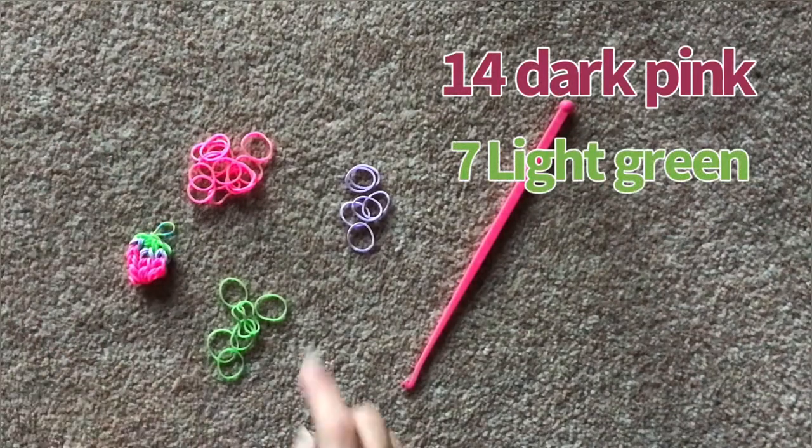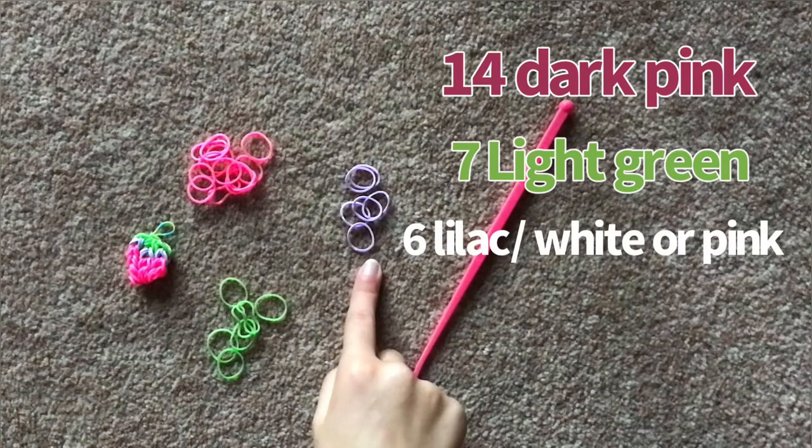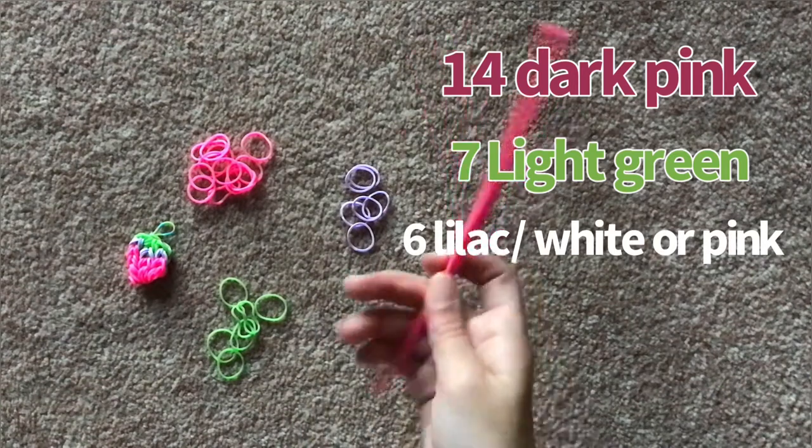To make this gorgeous strawberry you're going to need 14 dark pink rubber bands, seven light green rubber bands and six lilac ones. Now these don't have to be lilac, it can be white or light pink but I chose lilac and you also need this hook. Let's get started.